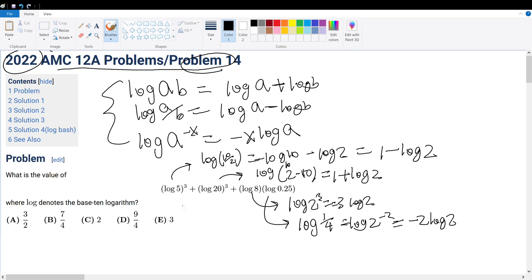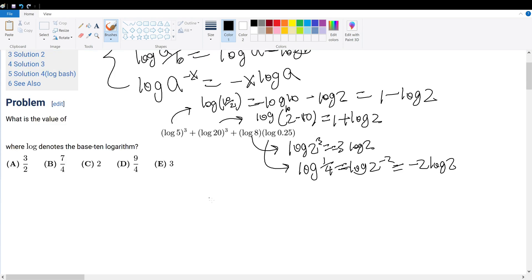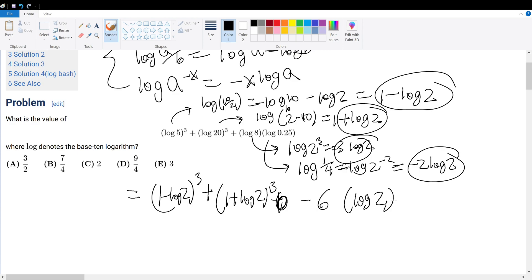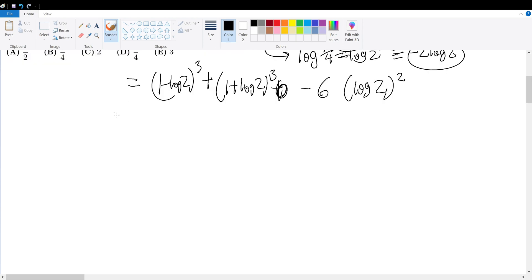Now we can simplify this equation. So this will be 1 minus log 2 cubed plus 1 plus log 2 cubed plus this times log 2 squared. Now we can simplify this a bit.